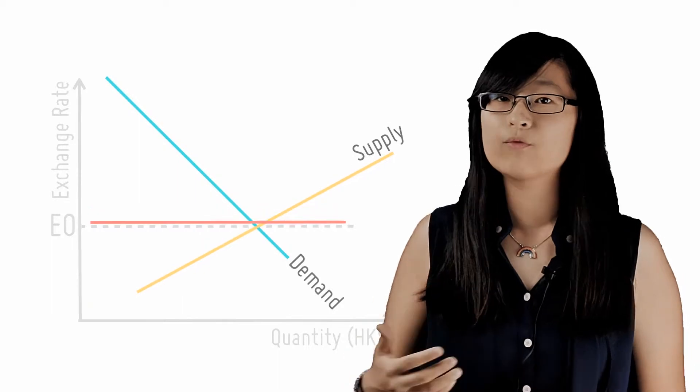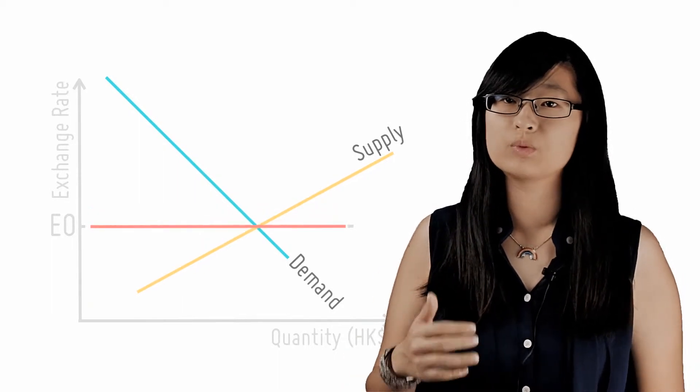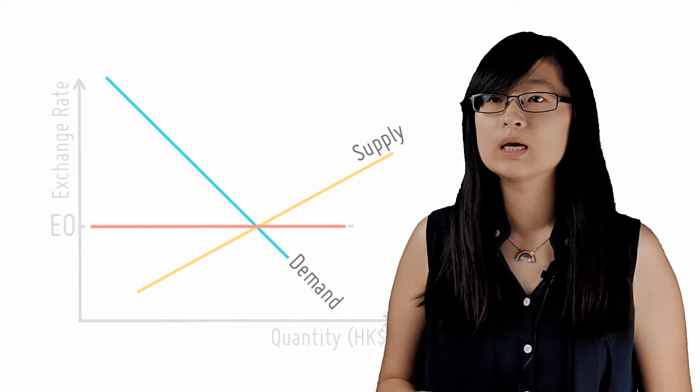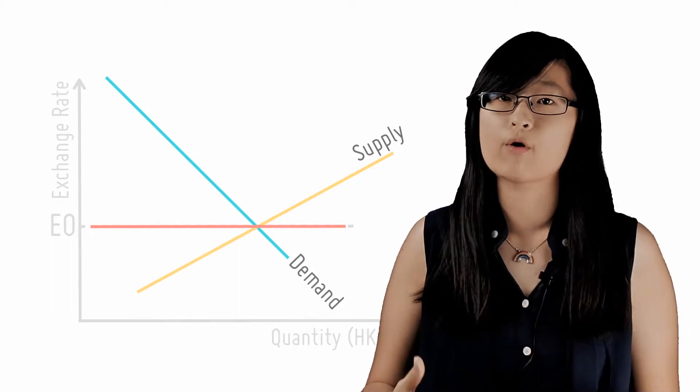This causes an outward shift in the supply curve which pushes the equilibrium price back to E0. Additionally, the Hong Kong government now has more foreign reserves.